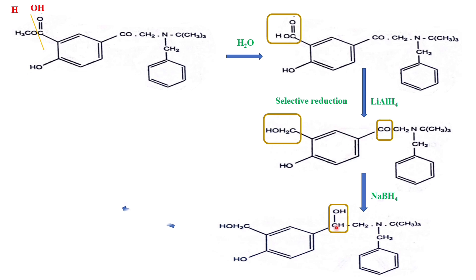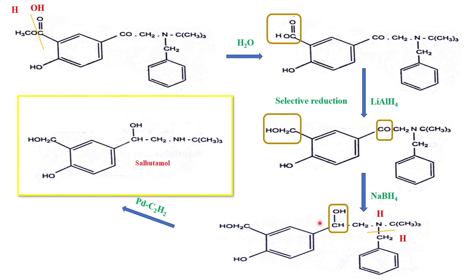The last step is treatment with palladium and hydrogen (hydrogenolysis). By this treatment, reduction occurs — that is, hydrogen is added by breaking the bond between the nitrogen and the carbon of the benzyl protecting group. Either side of that bond receives hydrogen, so the benzyl group is removed as toluene, and the remaining compound is salbutamol. That is all about the synthesis of salbutamol.